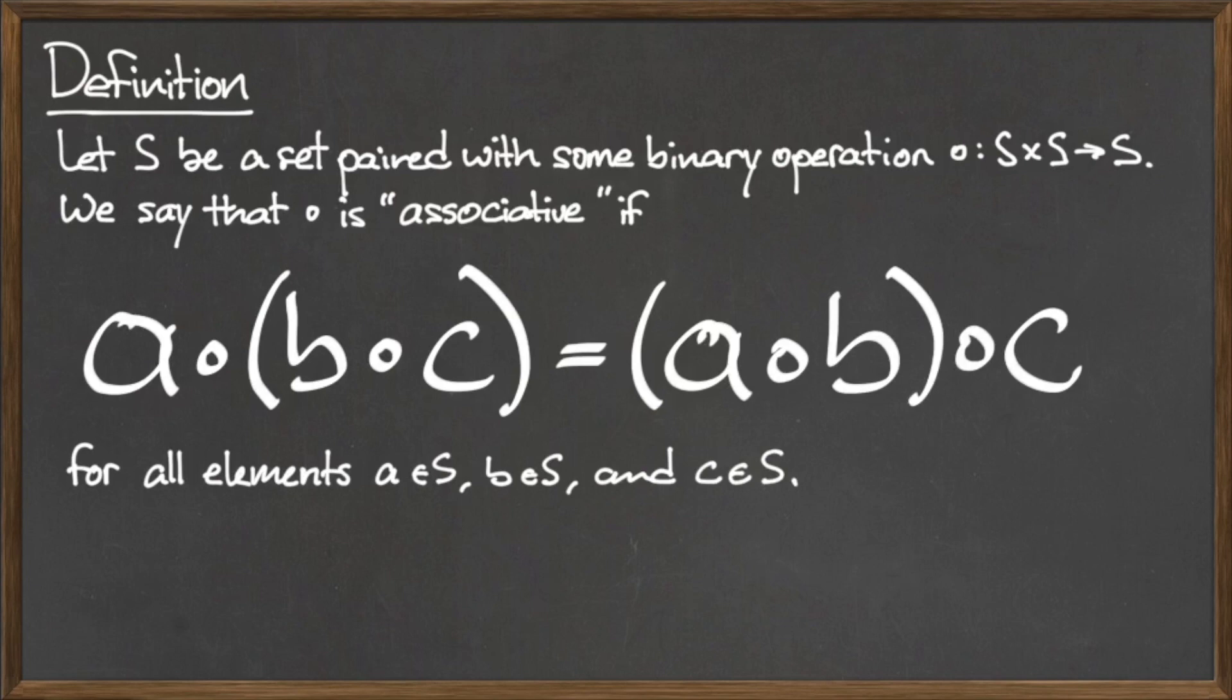We say that the binary operation dot is associative if a dot the quantity b dot c is equal to the quantity a dot b dot c for all elements a, b, and c in S.